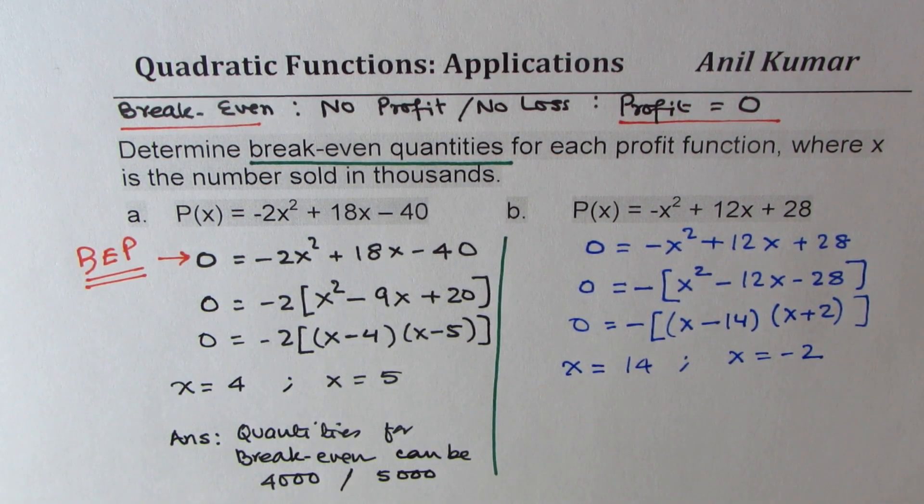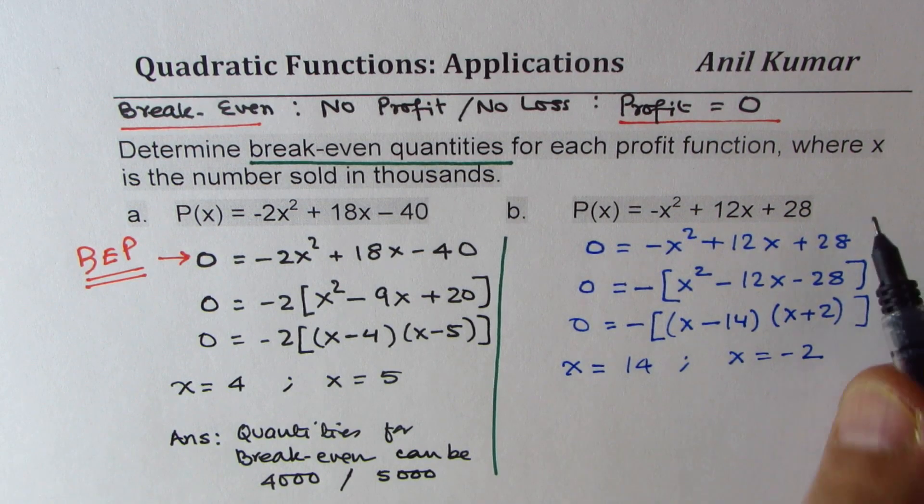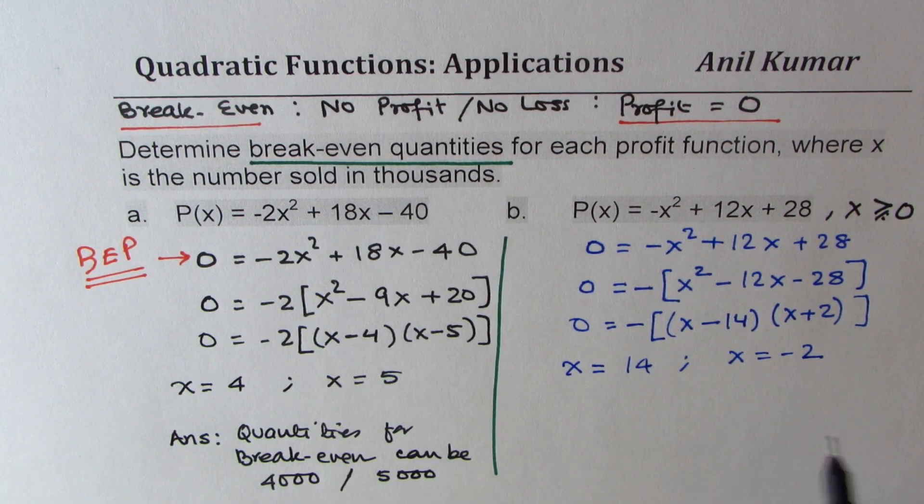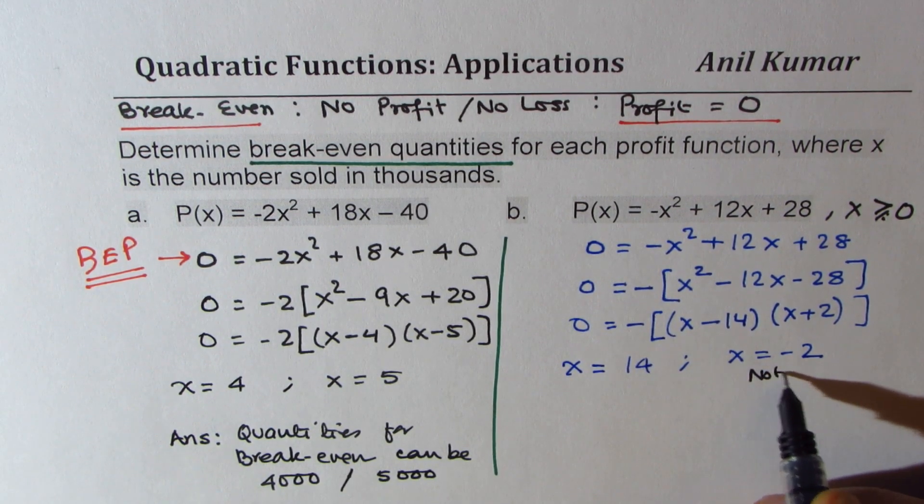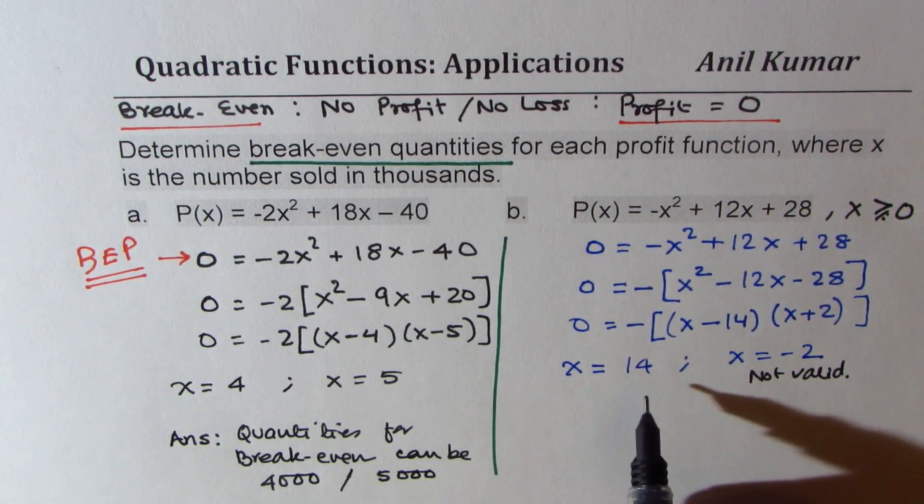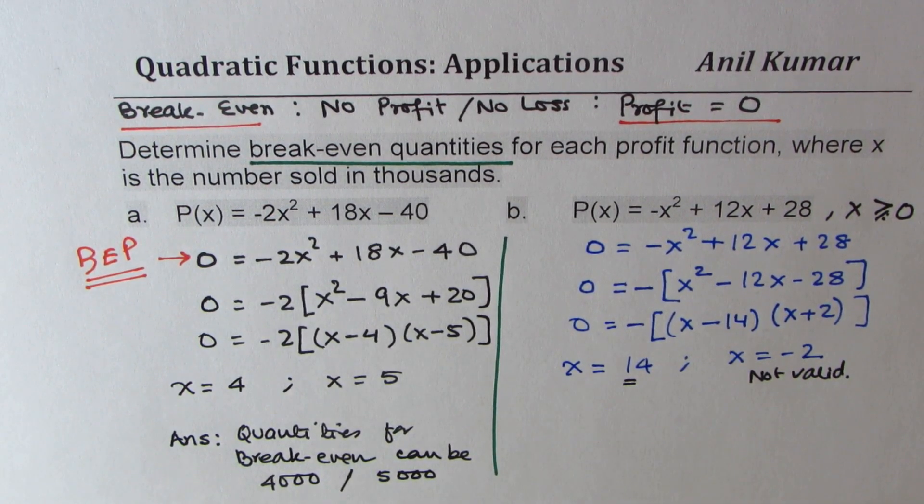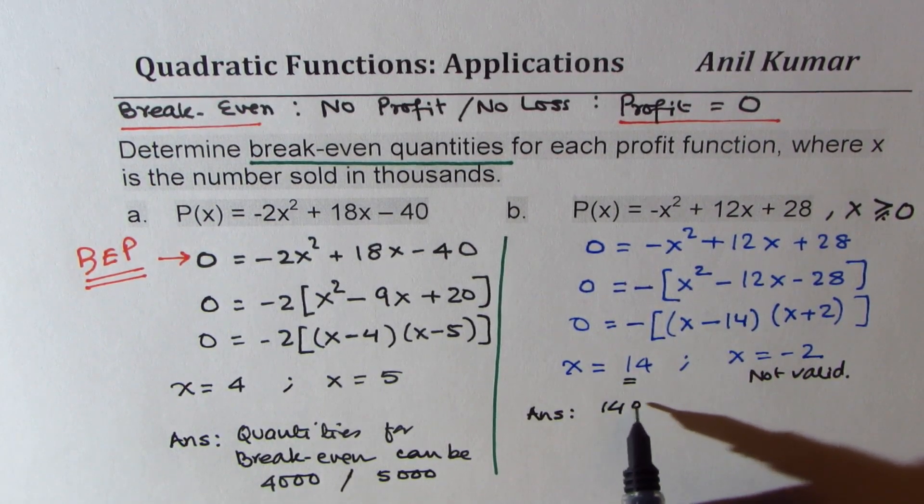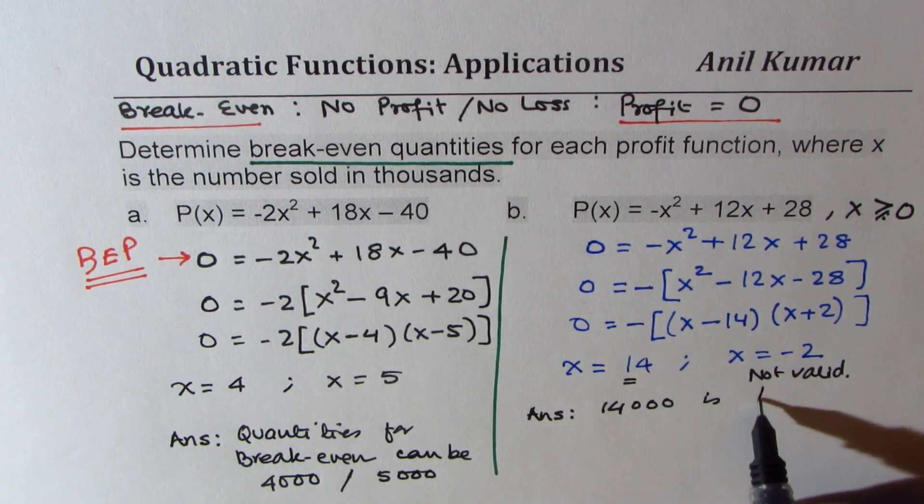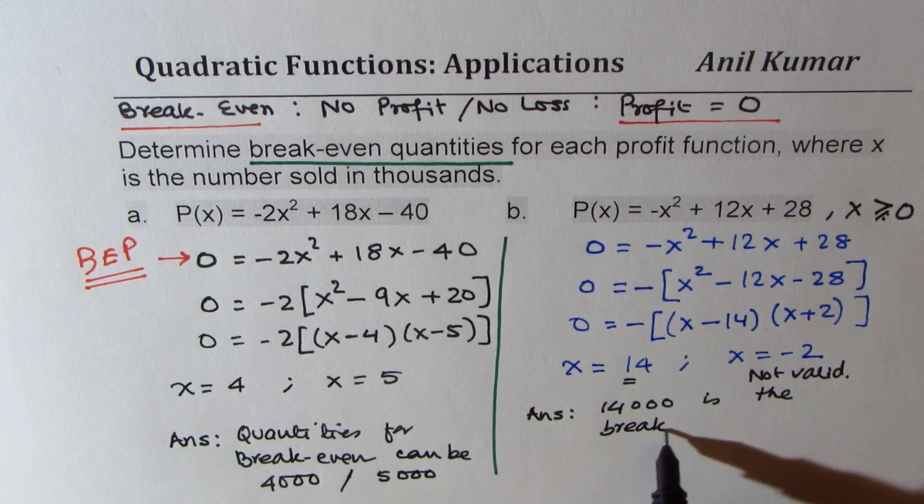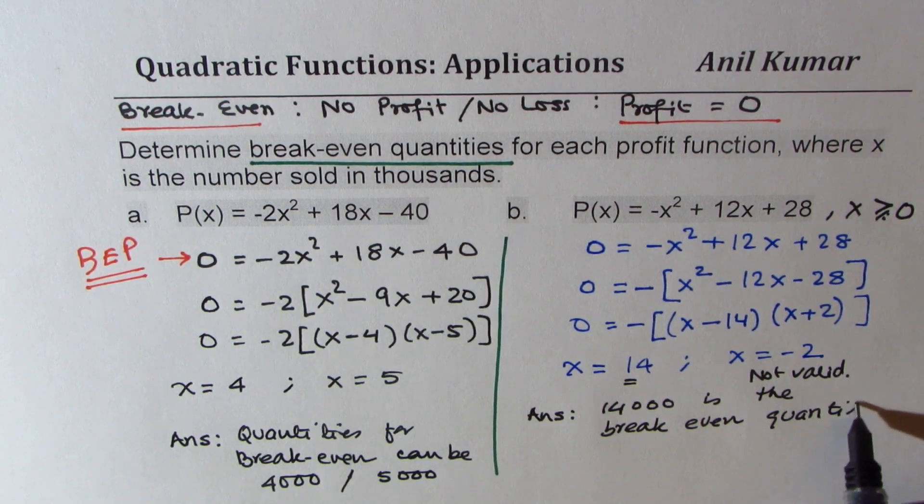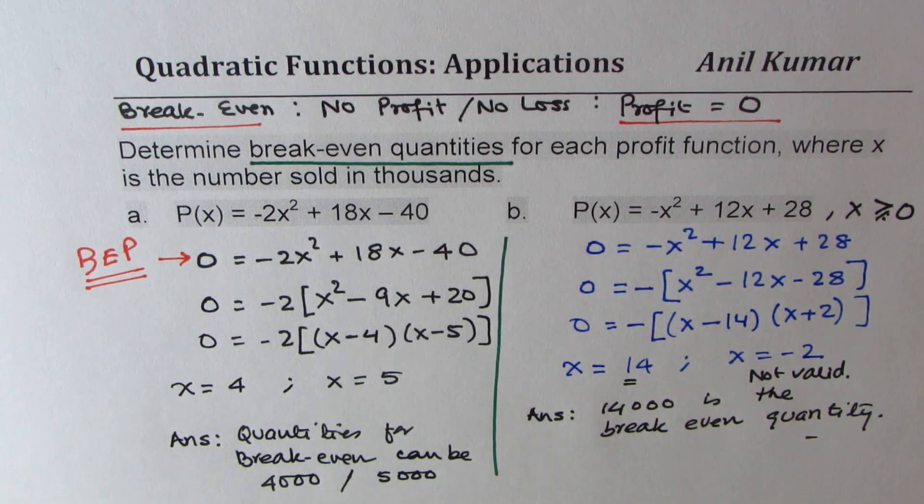Now in these quantities being sold, we know in such cases x should be greater than 0. So that is not valid. So the only valid answer is 14, and therefore our answer here is 14,000 is the break-even quantity.